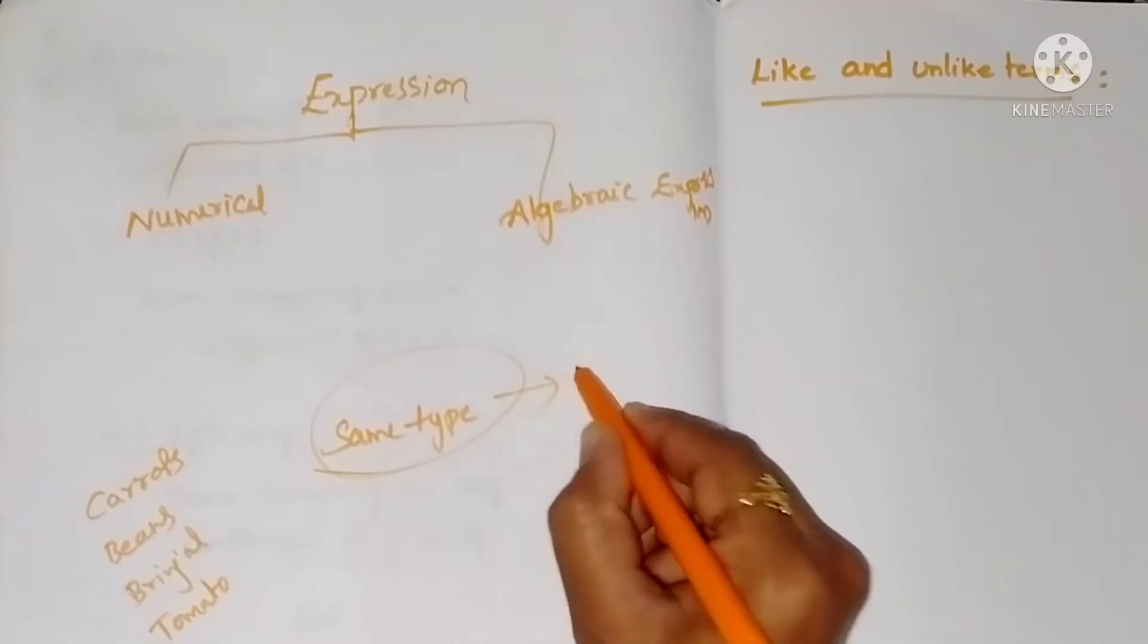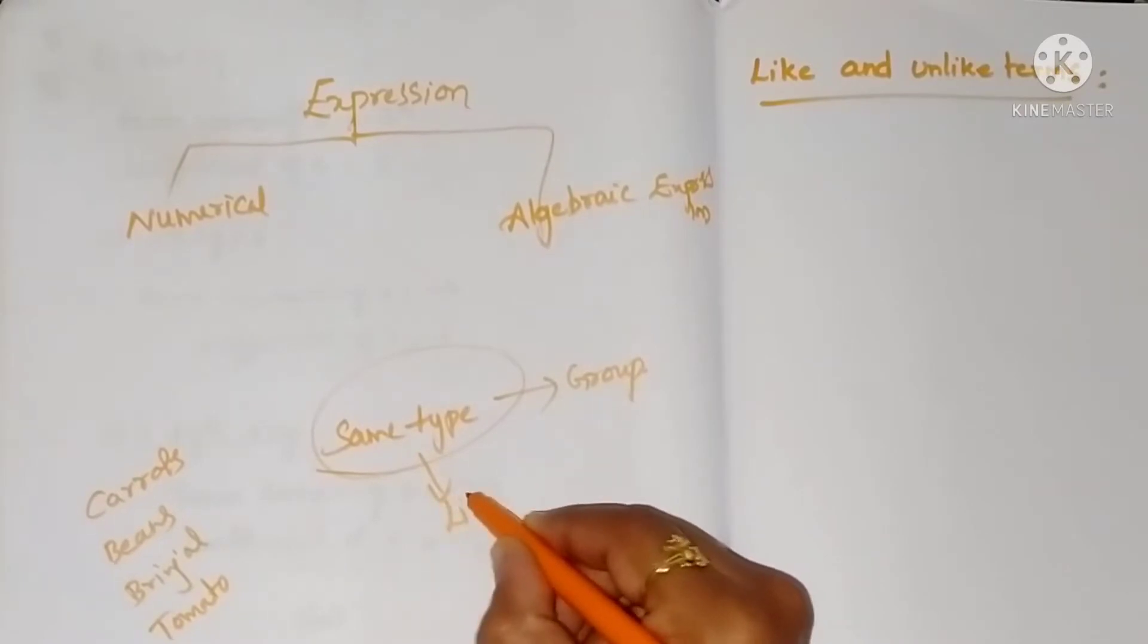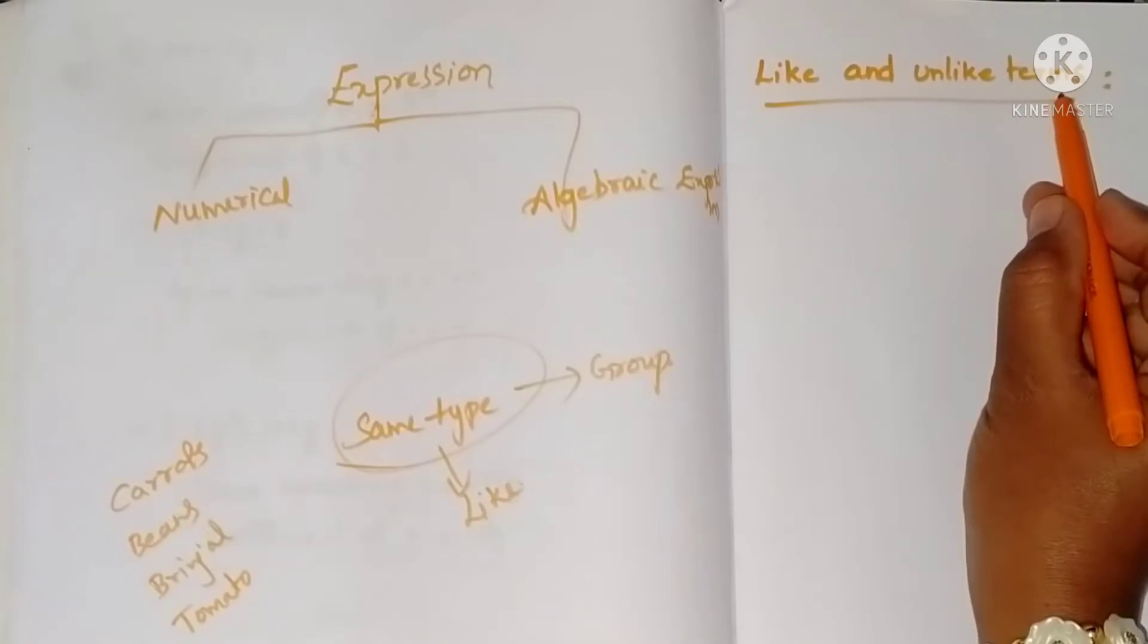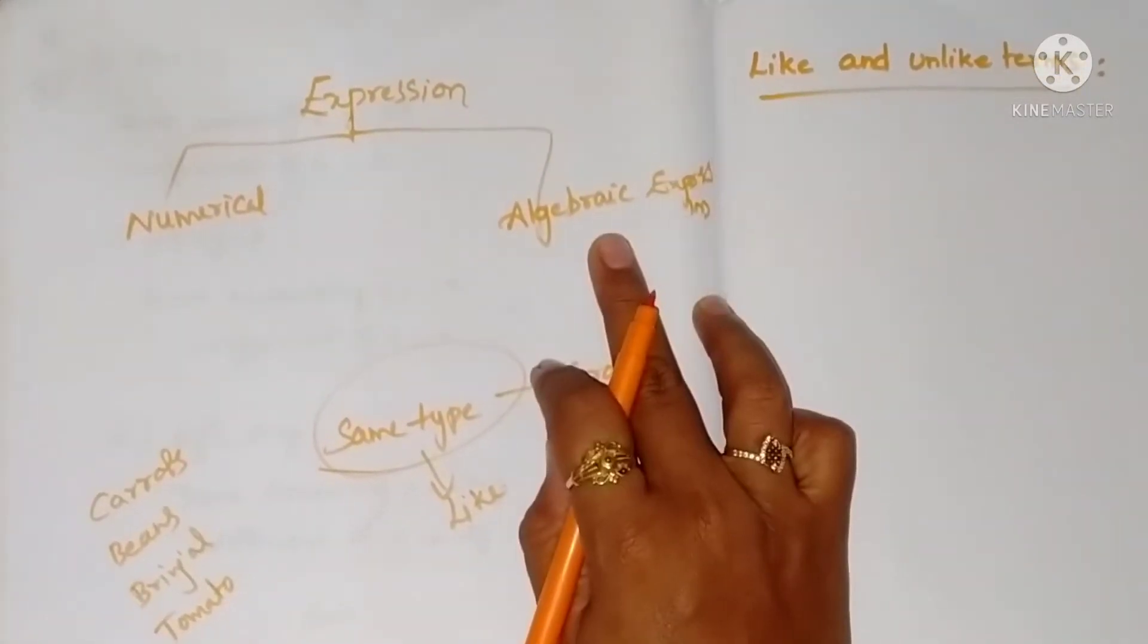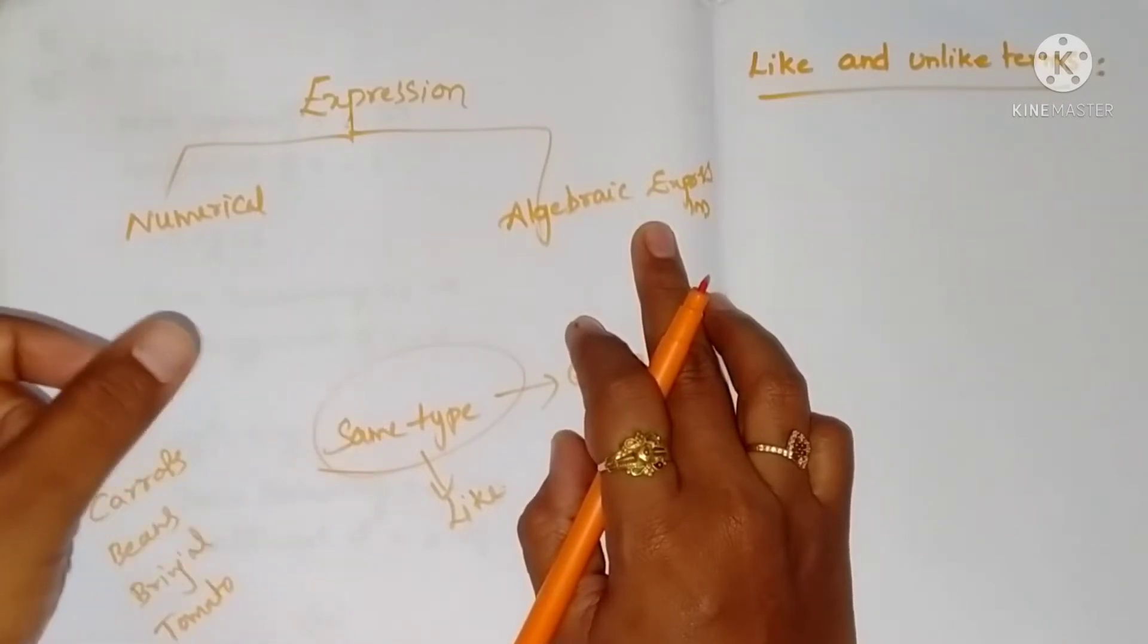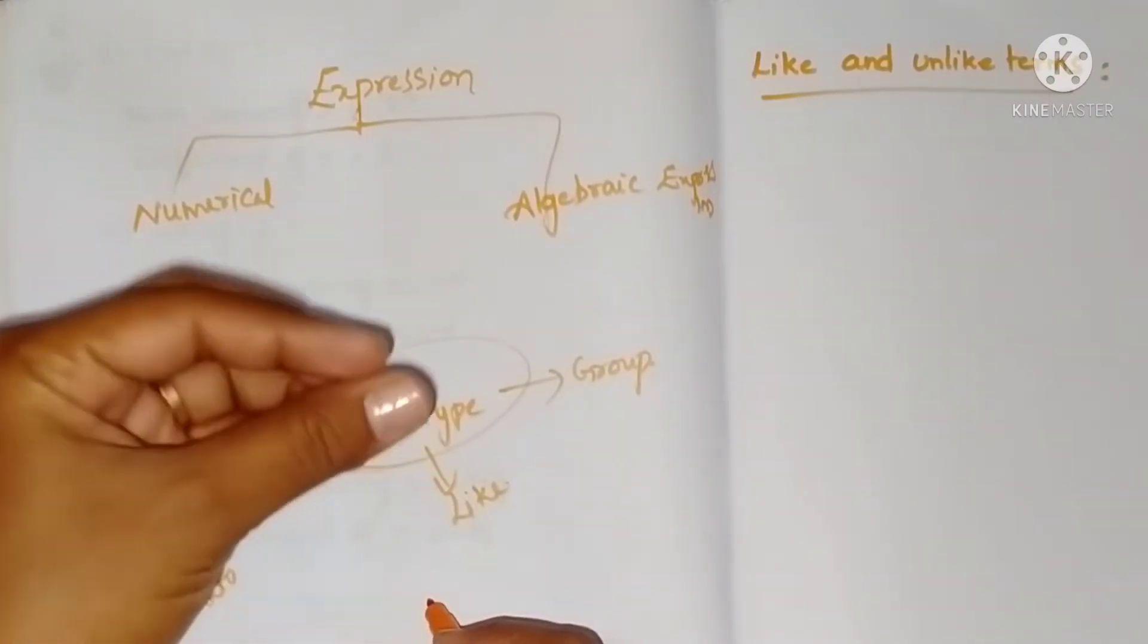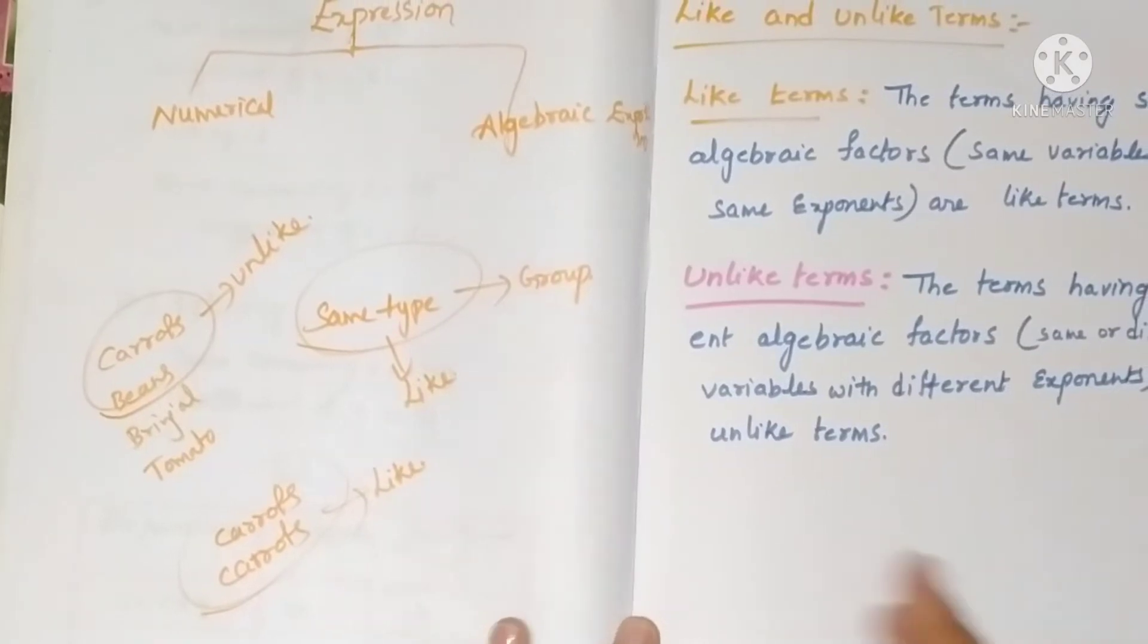Here, like terms means having the same type of variables. Algebraic expression means at least one algebraic term must be there. Like terms means the terms having same algebraic factors.